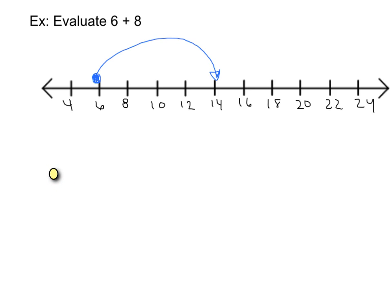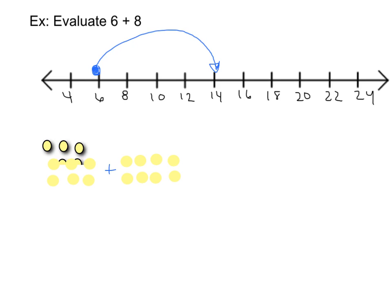This is what I mean by a marker. So for this problem I would need to start off with 6 markers. Here are my 6 positive markers. I'm going to add to that 8 more positive markers. So I've added my 8 more positive markers, and as you can see I have a total of 14 positive markers.